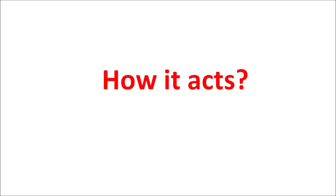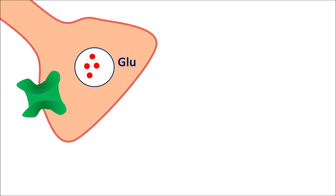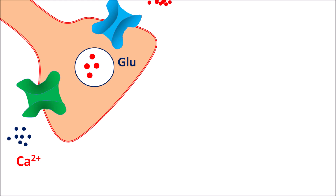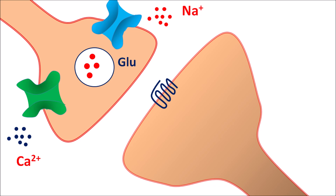Now let us see how this drug acts. Within the CNS, excitatory neurons can store glutamate, which is one of the excitatory amino acid neurotransmitters. The release of glutamate is controlled by calcium-mediated exocytosis, and the action potential is transmitted to the nerve terminal through voltage-gated sodium channels. So both sodium as well as calcium are required for the release of glutamate. This glutamate can act on the postsynaptic neurons which are equipped with glutamate receptors such as AMPA — an ionotropic receptor coupled with fast-acting sodium channels.